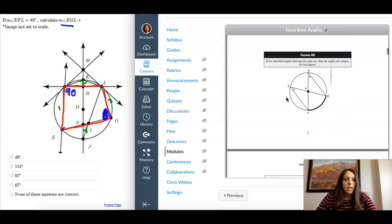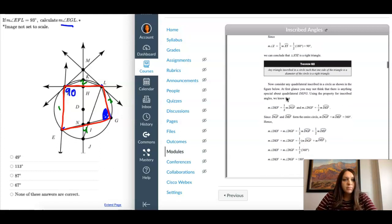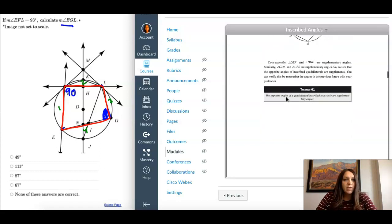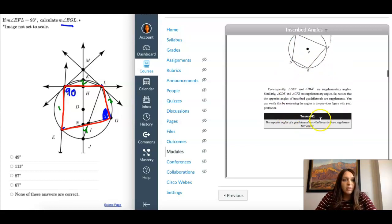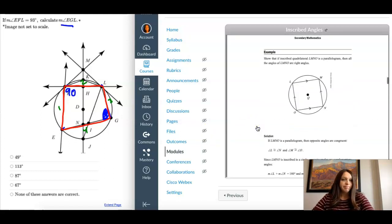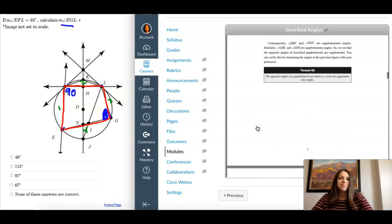So again, I'm going to go back to my notes and look at my theorems. Here we go. A quadrilateral inscribed in a circle, so opposite angles of inscribed quadrilaterals are supplementary. Supplementary angles. So you need to know what that means. A supplementary angle means they add to 180.